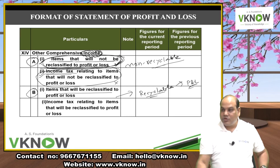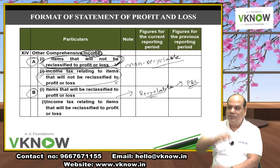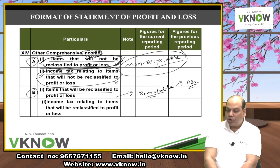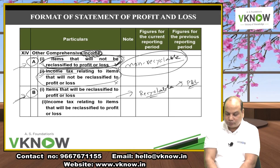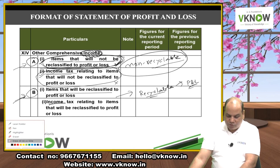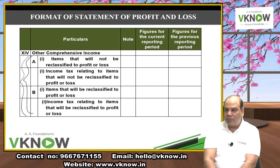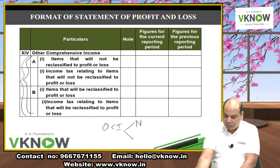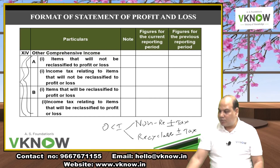For OCI items: if the figure is before tax, show the related income tax separately. If it's after tax, no separate tax presentation needed. Non-recyclable items never go to P&L; recyclable items move to P&L upon realization. Both categories carry a plus/minus tax adjustment depending on the item.